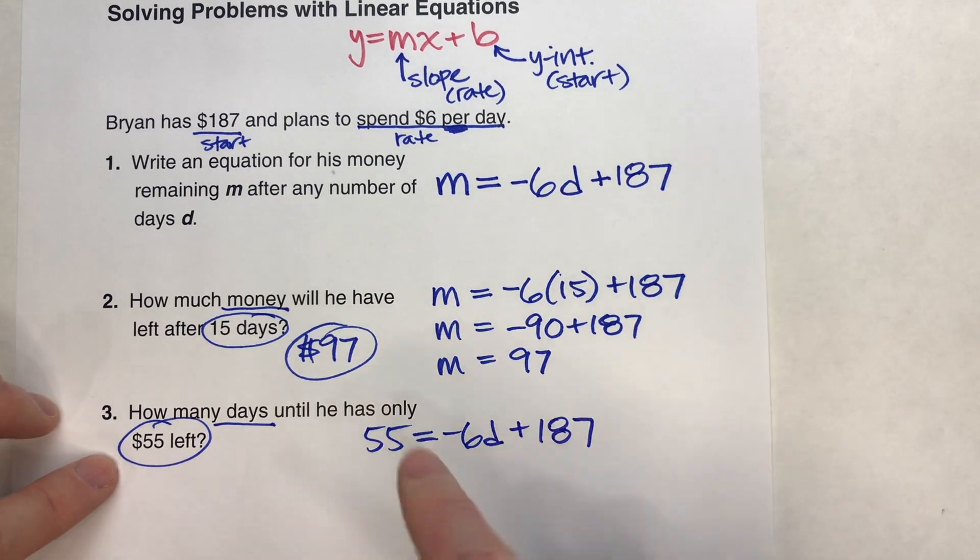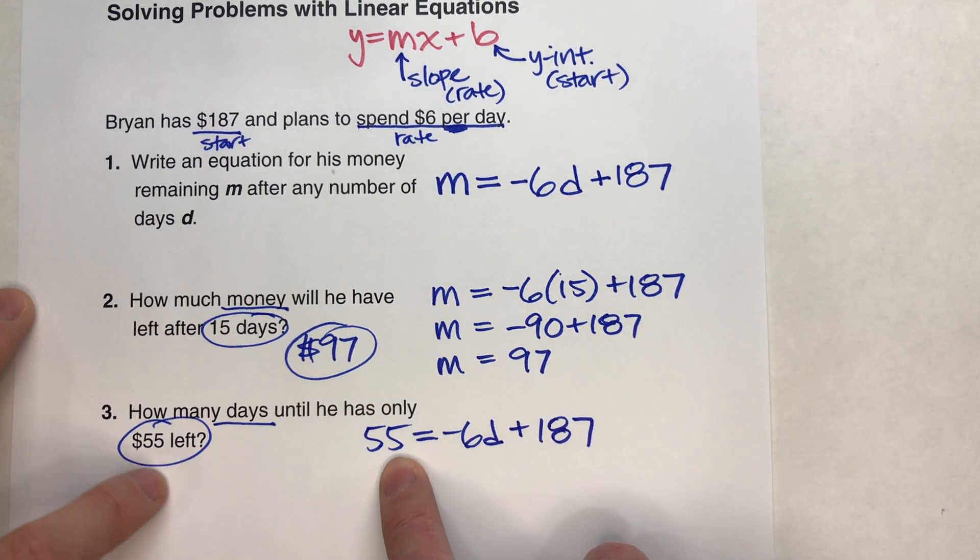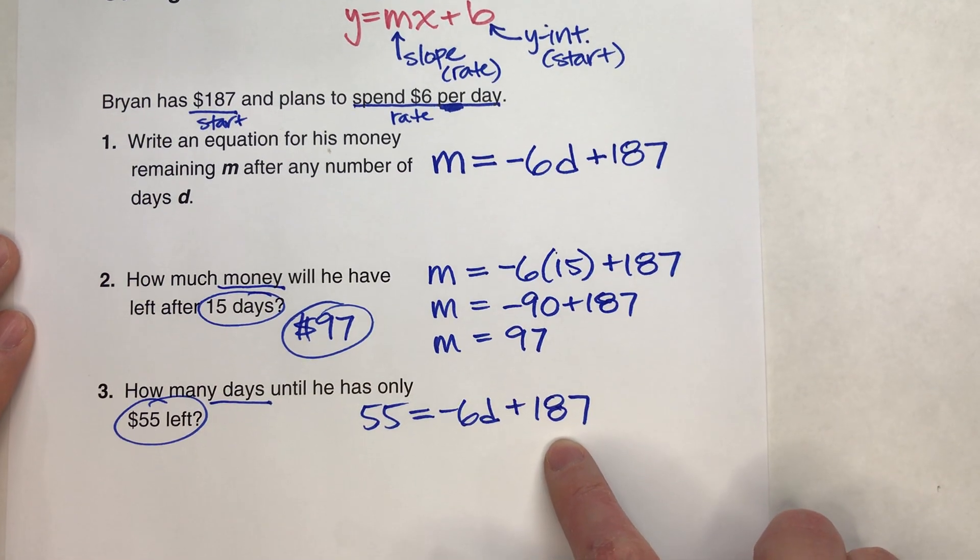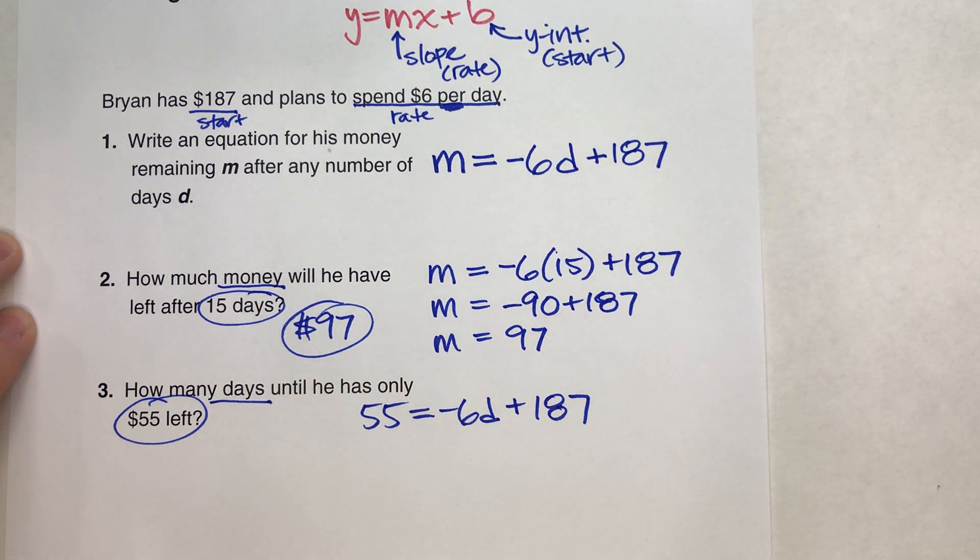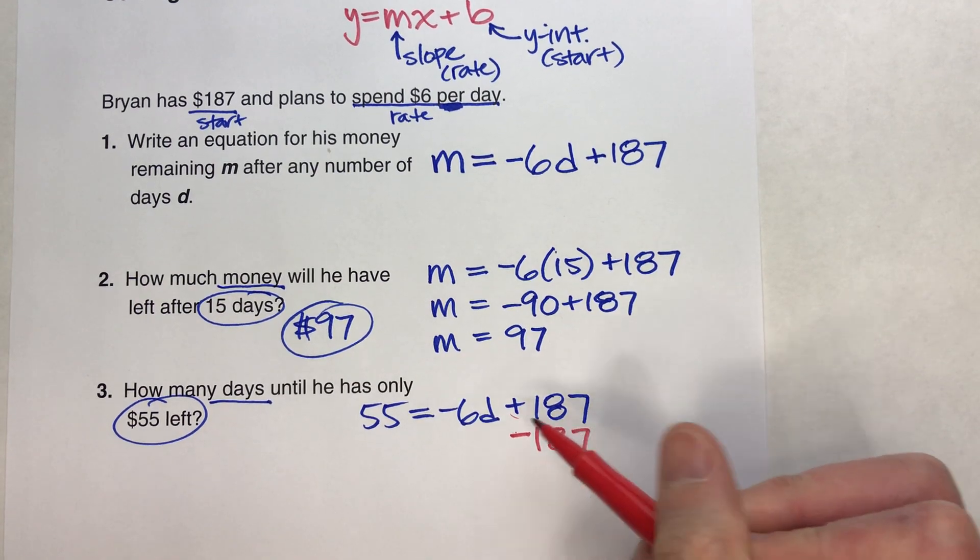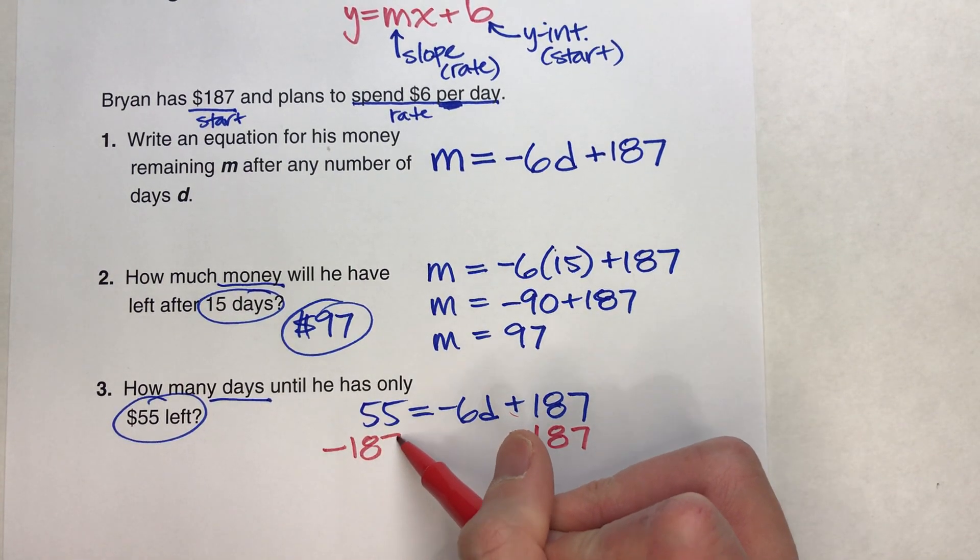And if we want to know how many days it'll take for us to end up with $55, we actually have to solve this equation using algebra. So let's do that. So if I'm trying to figure out what d is, I first need to undo this plus $187. So I'm going to subtract $187 from both sides of the equal sign.